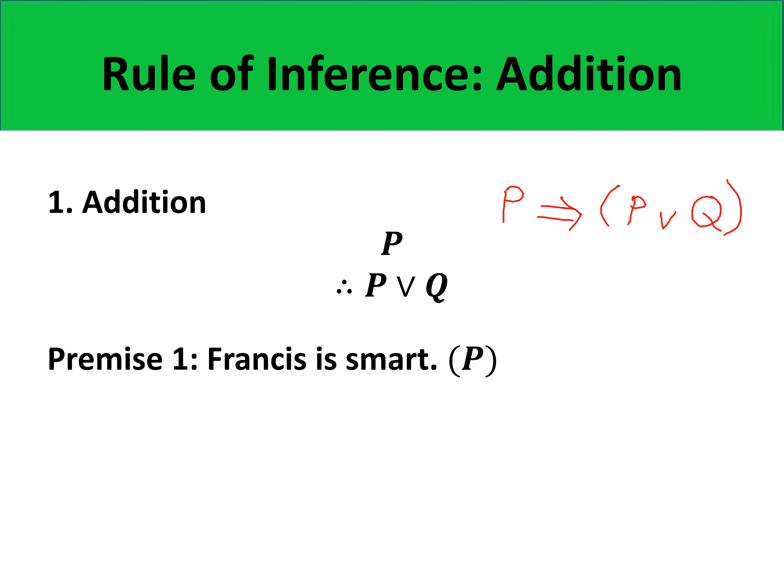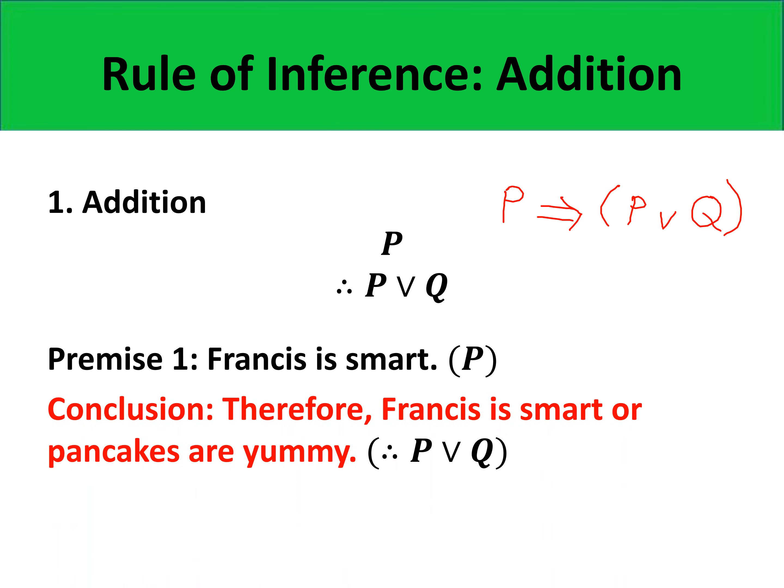As an illustration, let's have premise one: Francis is smart. This is our proposition P. The conclusion is P or Q, which means: therefore, Francis is smart, or we add another statement. In this case, therefore, Francis is smart or pancakes are young, which is our proposition Q. Now, even if our argument is senseless, in propositional logic this is considered valid.